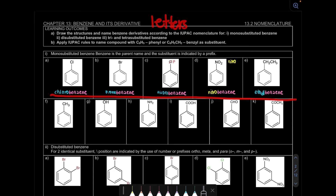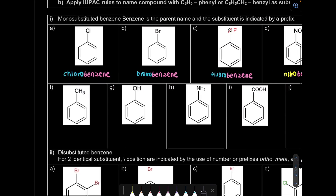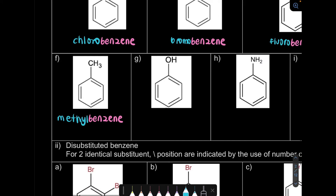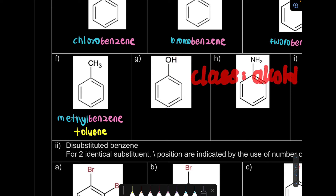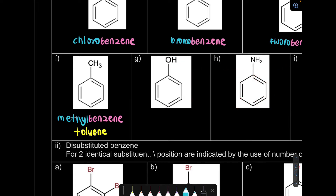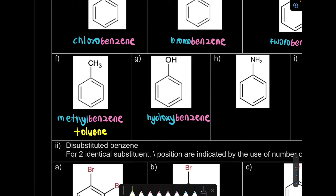That's questions A through E. Note that for letters combined with names, there is no space. Now let's look at question F, which is actually a methylbenzene — but the commonly used name is toluene. For question G, the class is alcohol, where the functional group is hydroxyl. But when it becomes a substituent, we name it as hydroxy. So here is hydroxybenzene, also most commonly known as phenol.